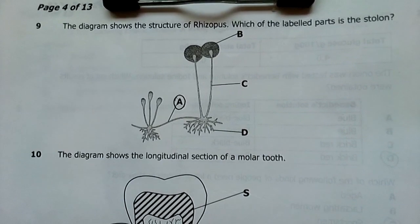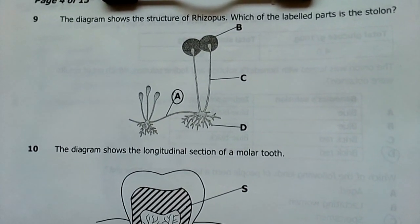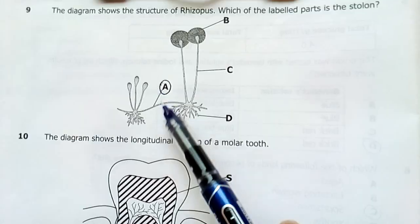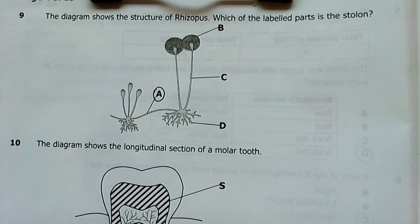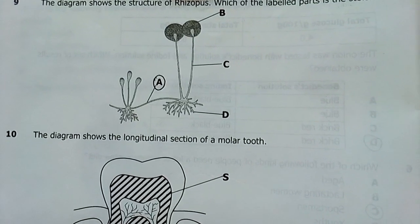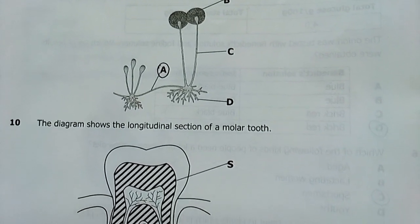Nine, the diagram below shows structure of rhizopus. Which of the labeled parts is the stolon? A. The stolon is A. Rhizopus is a common fungus, which is found on bread and many other foodstuffs in our homes.